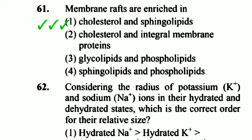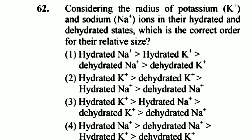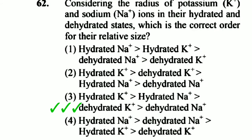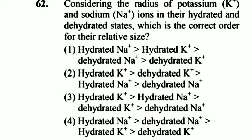Question 62: Considering the radius of potassium and sodium ions in their hydrated and dehydrated states, what is the correct order of their relative sizes? The correct order is: hydrated potassium ion > hydrated sodium ion > dehydrated potassium ion > dehydrated sodium ion. Hydrated potassium has the largest radius and dehydrated sodium ion has the smallest radius. Option 3 is right.